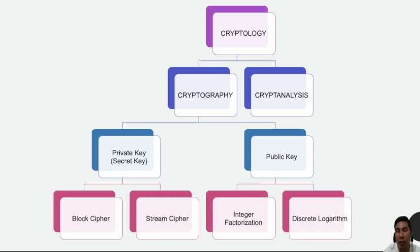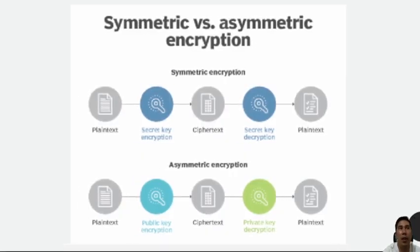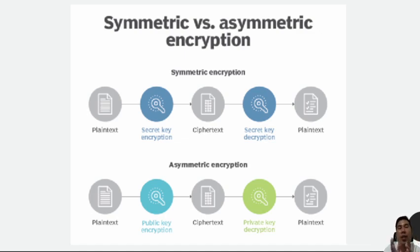We're going to be discussing more of this in the coming chapters. Here you can see the difference between symmetric and asymmetric cryptography. Symmetric cryptography uses a single secret key that the sender uses to encipher the data and the receiver uses to decipher it, while asymmetric cryptography uses a key pair to encrypt and decrypt the data.